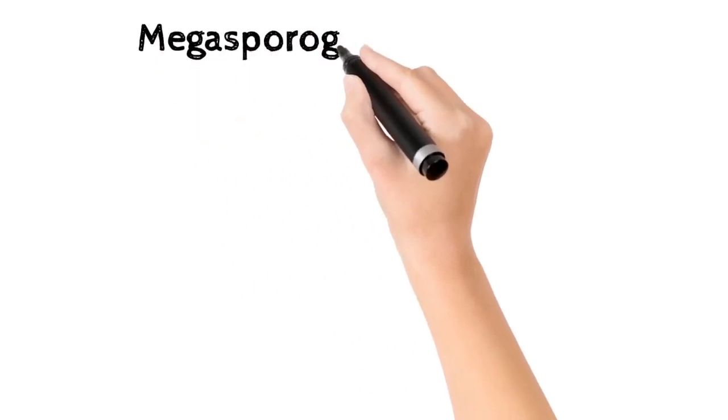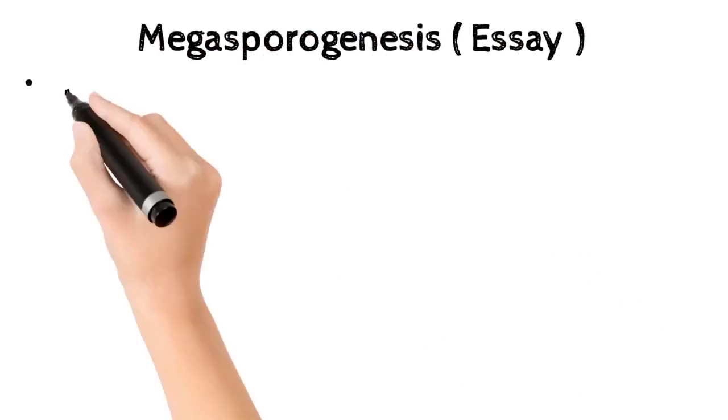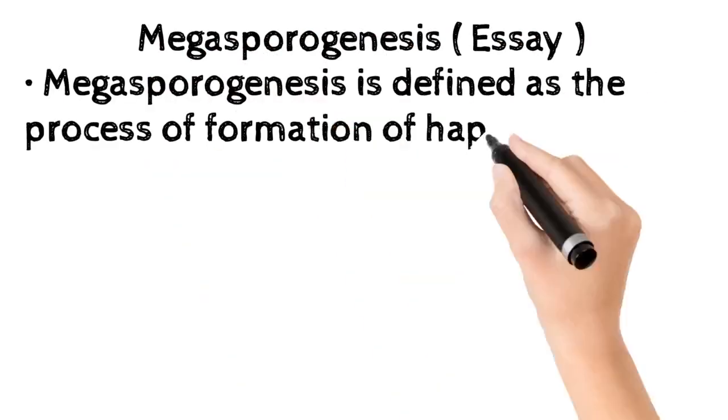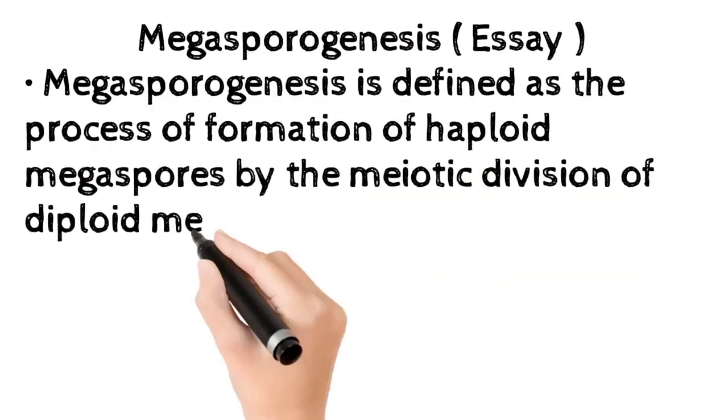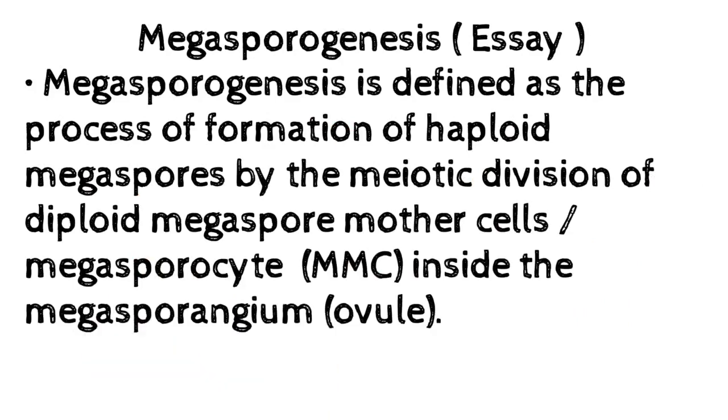This is a suggested video on megasporogenesis, explaining the answer for a short answer question. Megasporogenesis is defined as the process of formation of haploid megaspores by the meiotic division of diploid megaspore mother cells, or megasporocytes (MMC), inside the megasporangium ovule.